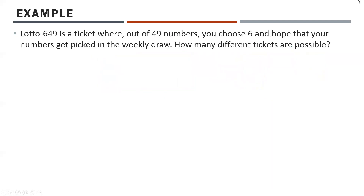Lotto 649 is a ticket where out of 49 numbers, you choose six and hope your numbers get picked in the weekly draw. How many different tickets are possible? The order you pick your numbers in doesn't matter — they're automatically put in order from smallest to largest. So with 49 numbers choosing six, where order doesn't matter, we use 49C6, which gives us the answer.